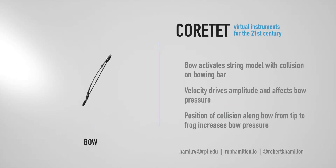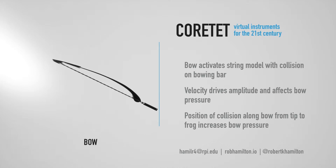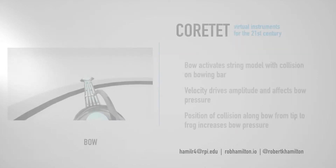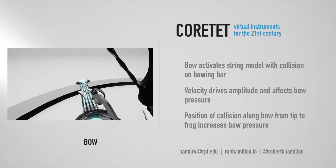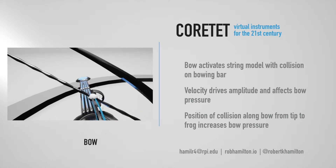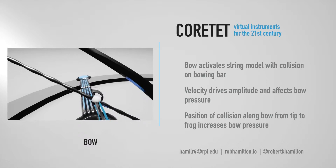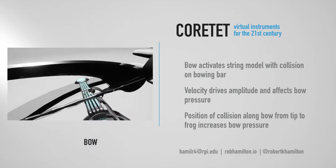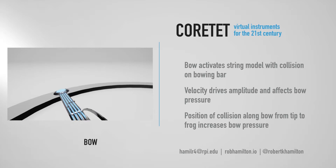The Quartet bow acts much like a traditional bow, activating each instrument's strings when it comes into contact with the bow pressure bar. The velocity of the bow controls note velocity and, to a lesser extent, bow pressure, which is primarily controlled through the combined locations of collision along both bow and bow pressure bar.